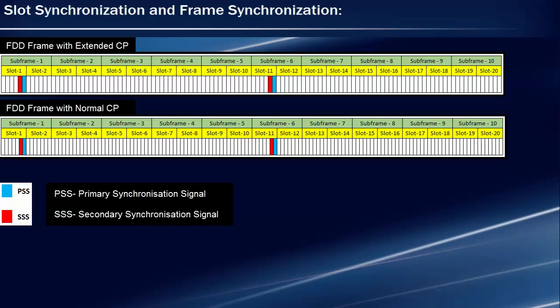During slot synchronization, UE gets to know the starting of the slot, and during frame synchronization, UE gets to know the starting of the frame. Here is the frame structure of an FDD system for both normal and extended cyclic prefixes. It shows the symbols in which PSS and SSS are transmitted over the air interface. PSS is transmitted in the last OFDM symbol of the first and 11th slots of the radio frame, and SSS is transmitted in the symbol immediately preceding PSS.